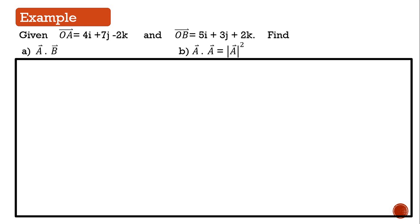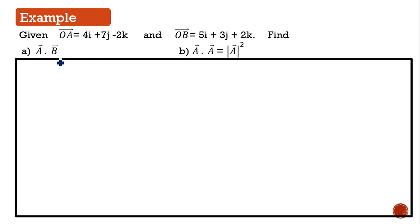Let's look at an example. Given vector OA equal to 4i plus 7j minus 2k and OB equal to 5i plus 3j plus 2k. Find vector a dot vector b.